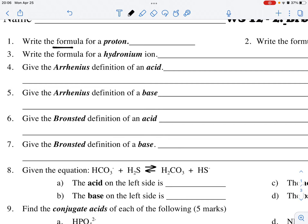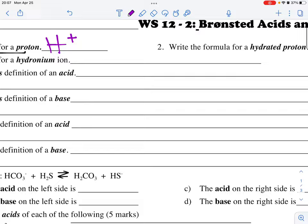First, we're asked to write the formula for a proton. The formula for a proton in this context of this unit will be H+. Remember that we talked in class about a proton can be a hydrogen atom that has lost its electron. A hydrogen atom that's lost its electron has an H+.